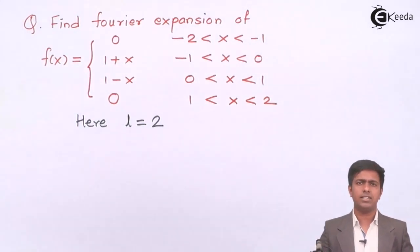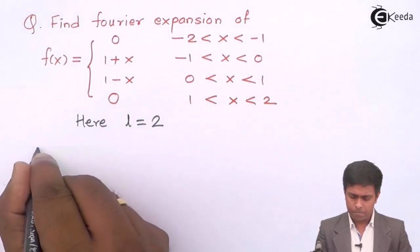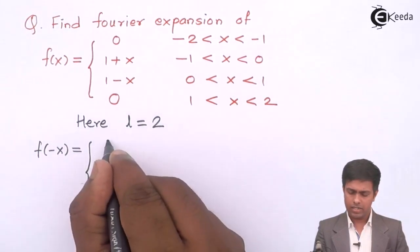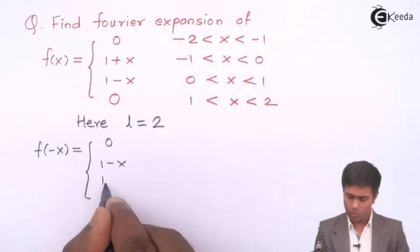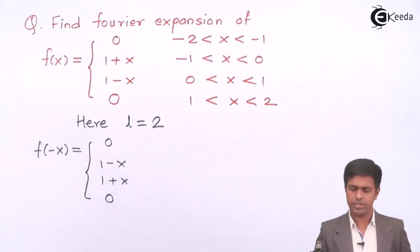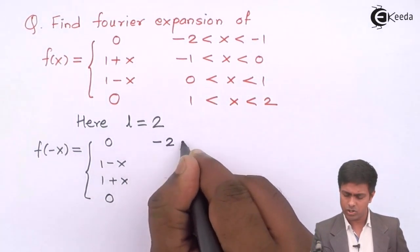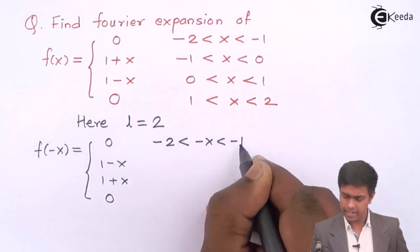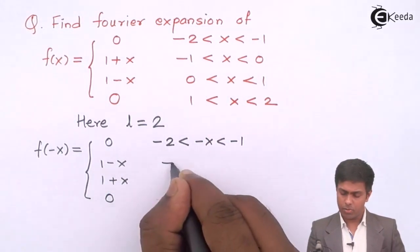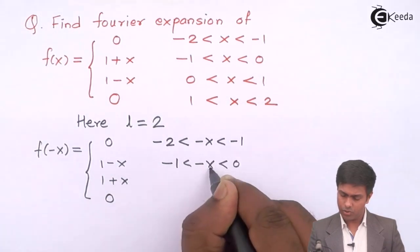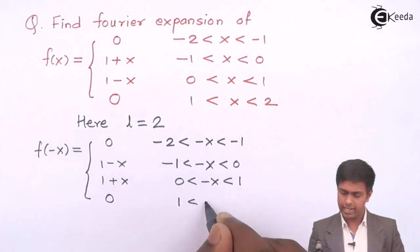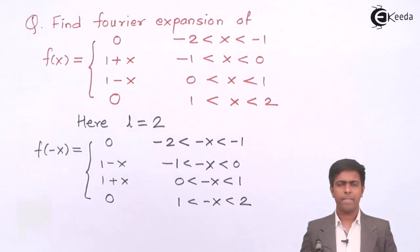To check even or odd, we compute f(-x). The four values become: 0, (1 - (-x)) = (1+x), (1 - x), and 0. The corresponding ranges transform as: -2 < -x < -1, -1 < -x < 0, 0 < -x < 1, and 1 < -x < 2.